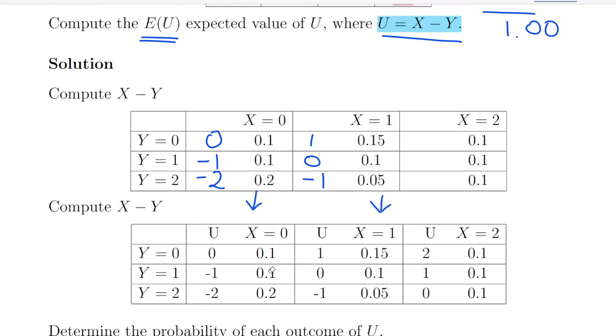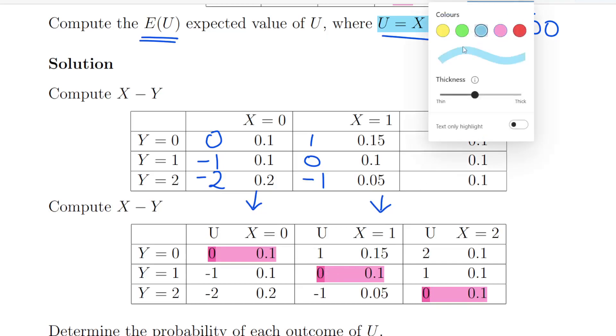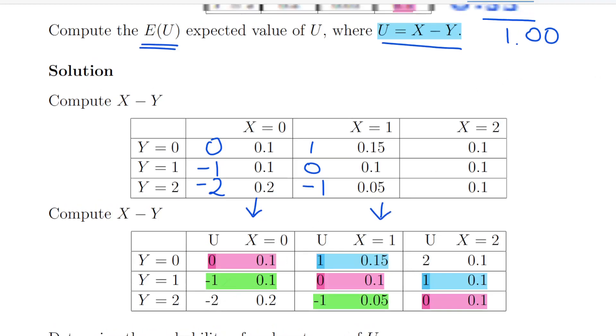There are five possible outcomes, five possible values for U. In one instance, we could have U equal to 0, and this corresponds to three of the cells on our table. Likewise, there are two cells that correspond to a value of U equal to 1, and two cells that correspond to a value of U equal to minus 1. And then also we have minus 2 and 2 respectively.